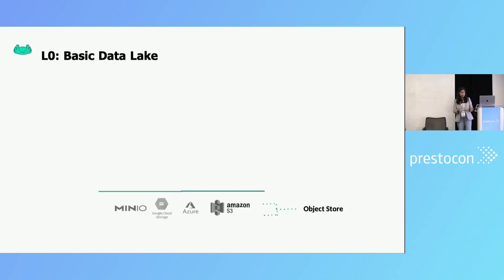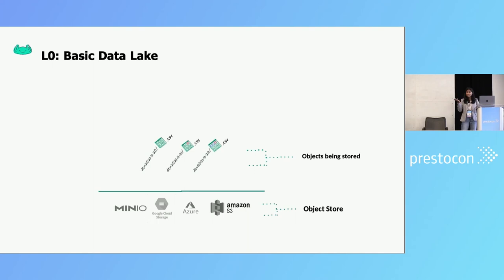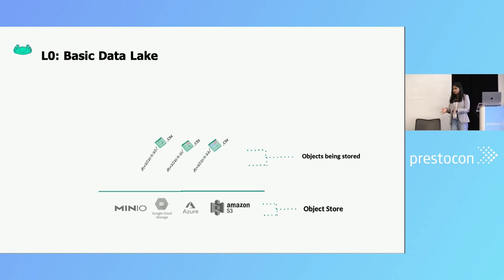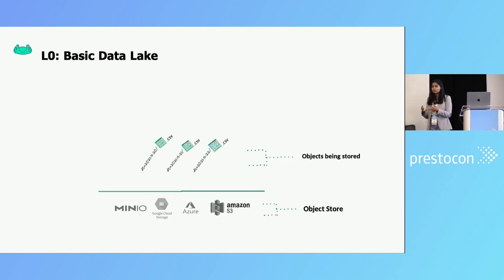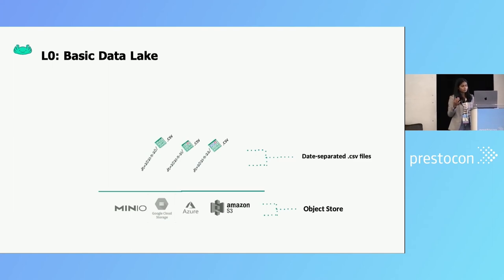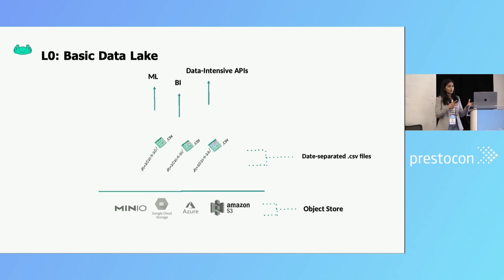A basic data lake is built on these object stores, where we literally dumped our data from all the different data sources. We initially just dumped all the files without caring about format optimization — some of them CSVs, some of them JSONs, because most applications write APIs in JSON format. The first level of optimization was to partition the data files into day partitions and geography, depending on our use cases. And then we had downstream applications — ML, analytics, AI — consuming from these data lakes.